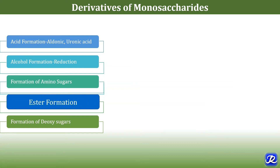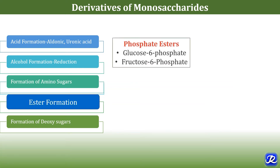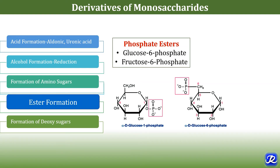Ester formation is also an important reaction of monosaccharides. Phosphate esters are formed by reaction of phosphoric acid with one or more hydroxyl groups of a sugar. Examples of phosphate esters include glucose-6-phosphate and fructose-6-phosphate, which are intermediates of glycolysis.